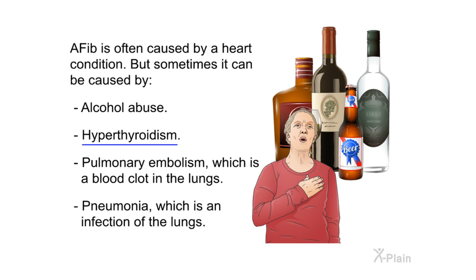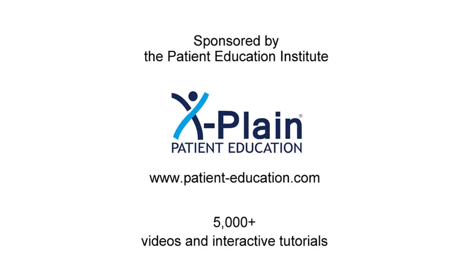AFib is often caused by a heart condition, but sometimes it can be caused by alcohol abuse, hyperthyroidism, pulmonary embolism — a blood clot in the lungs — or pneumonia, which is an infection of the lungs.